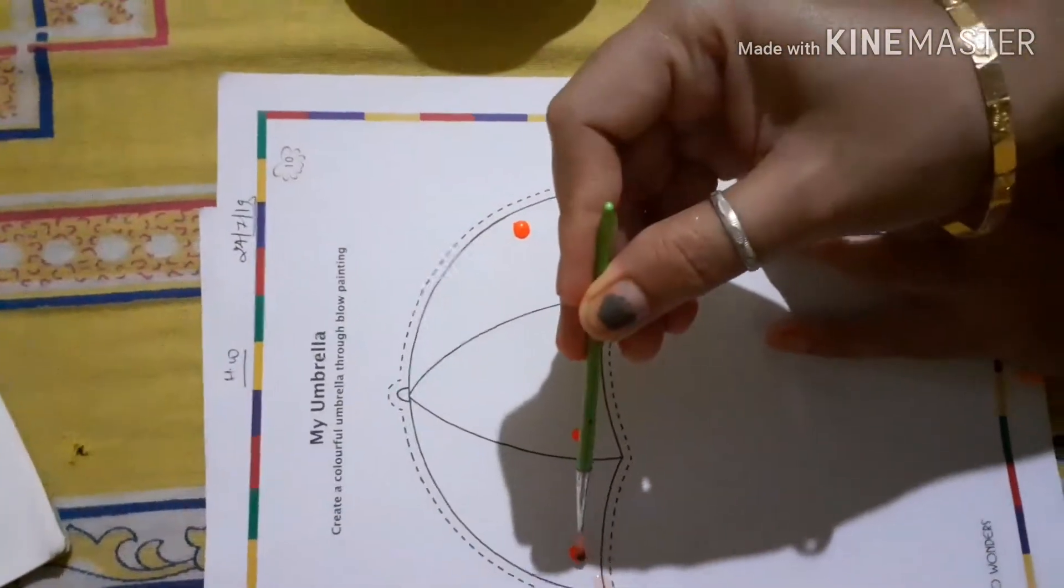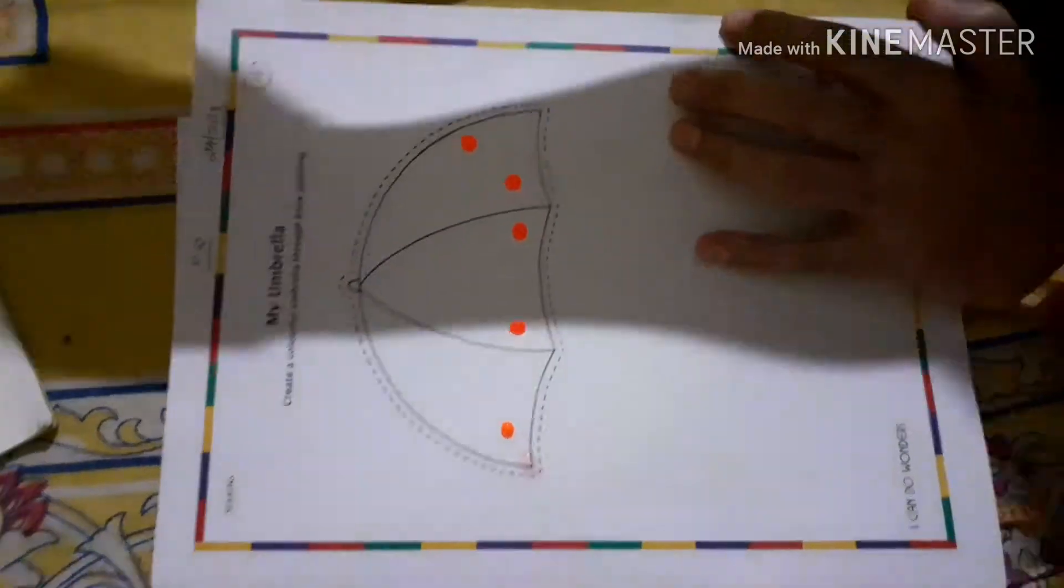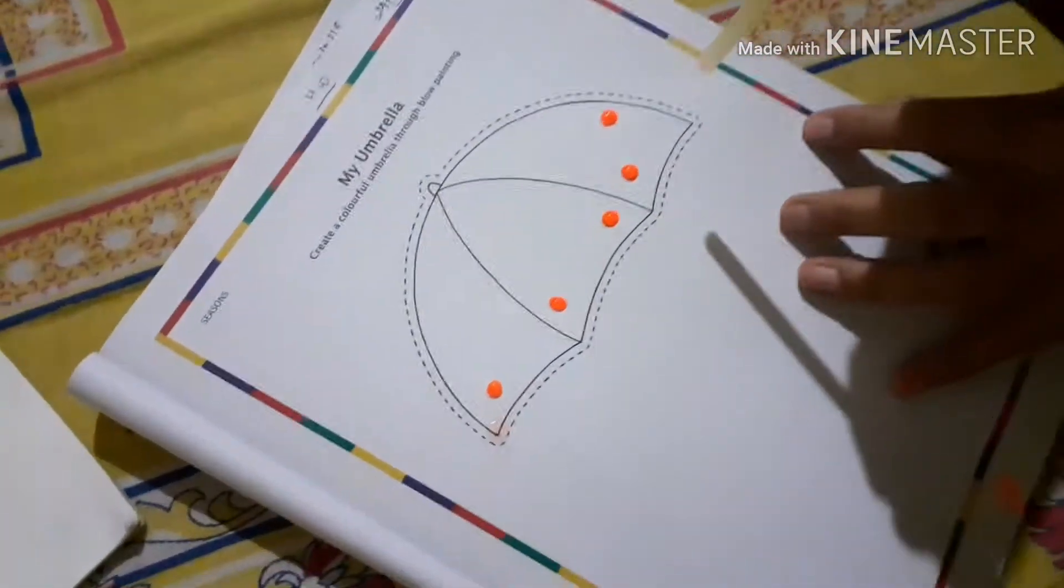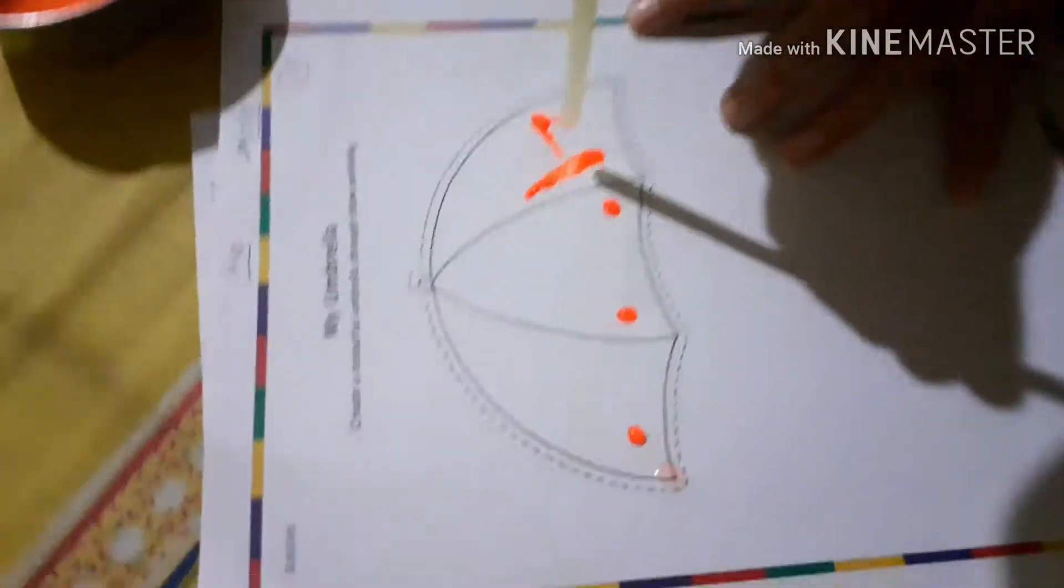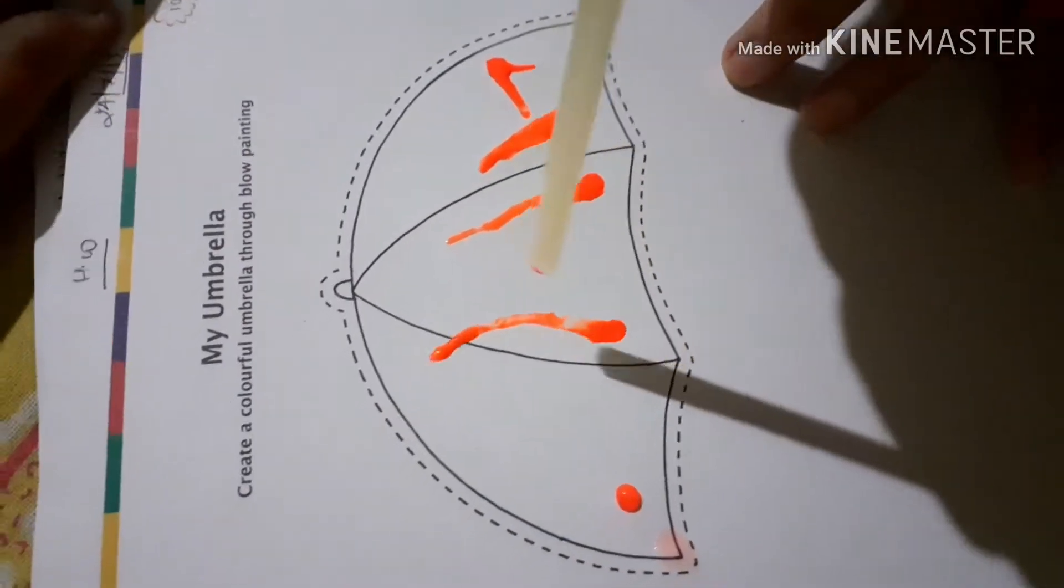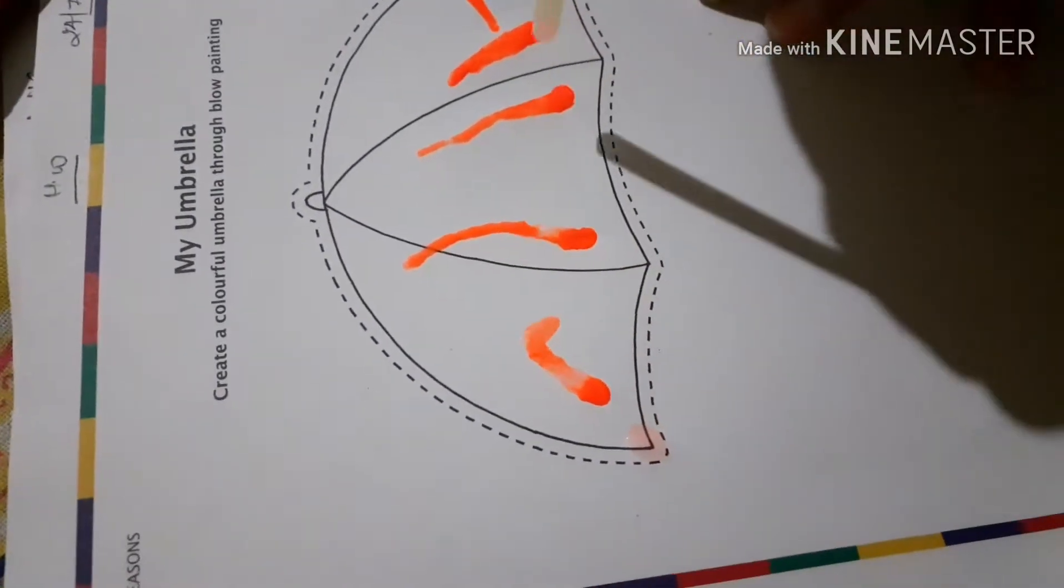After that you have to take a pipe or a straw and blow air with this pipe on these colors and these colors will spread. See, like this you have to blow air with pipe or straw, then this color will spread over the sheet. Like that.